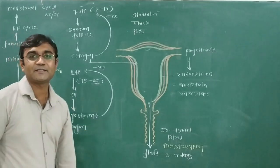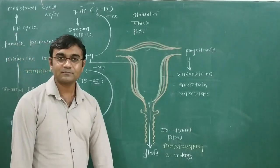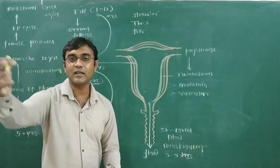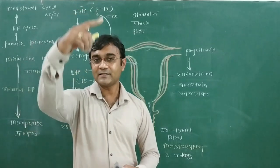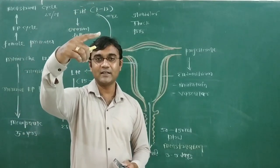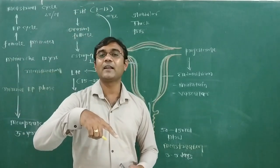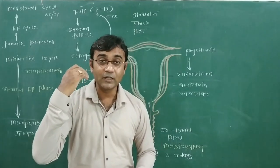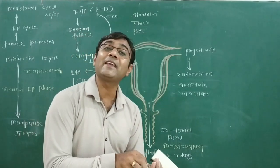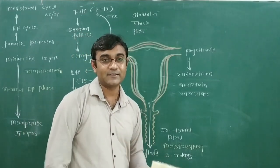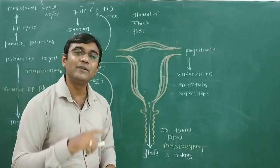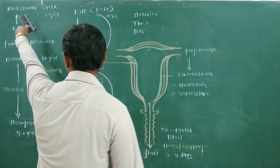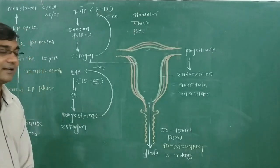So one menstruation flow runs for 3 to 5 days. After 3 to 5 days, the endometrium is once again built up under estrogen and progesterone. At day 28, low concentration of hormones once again starts menstruation. The cyclic events taking place between one menstruation and the next is called the menstruation cycle.